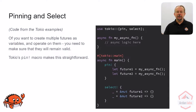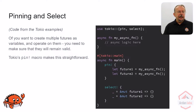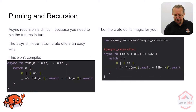The error messages are getting much better now, by the way. A lot of the time it actually tells you that you need to pin this, instead of something utterly incomprehensible. Tokio provides a pin macro that makes it relatively straightforward to do this — you just have to remember to use it, and the compiler is going to remind you.